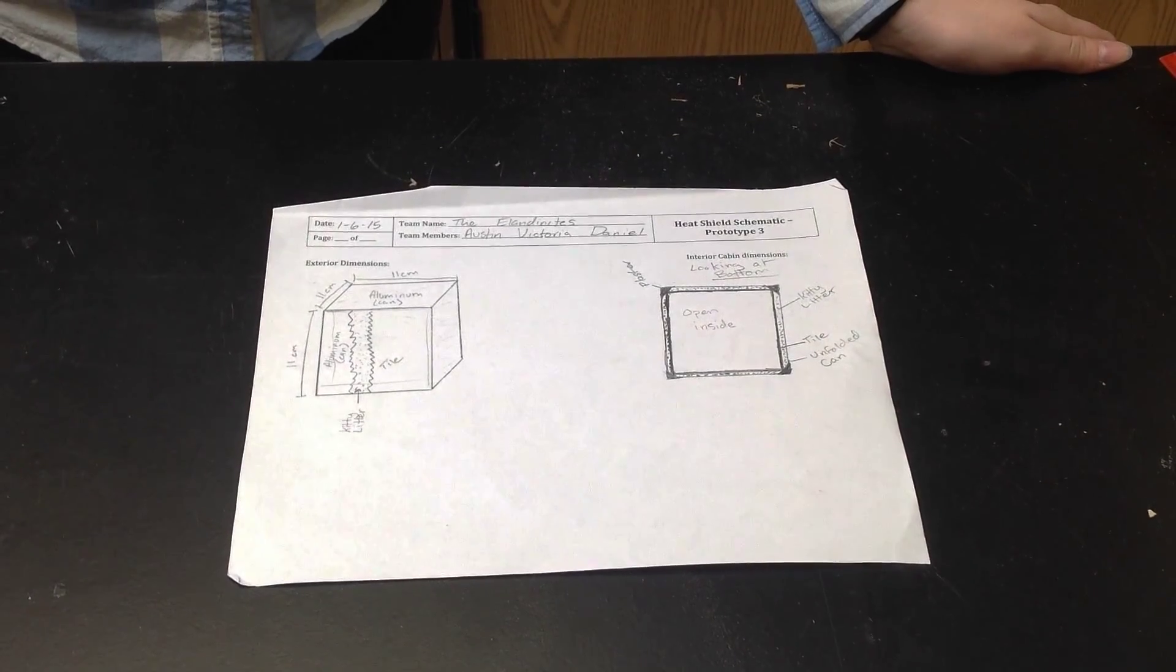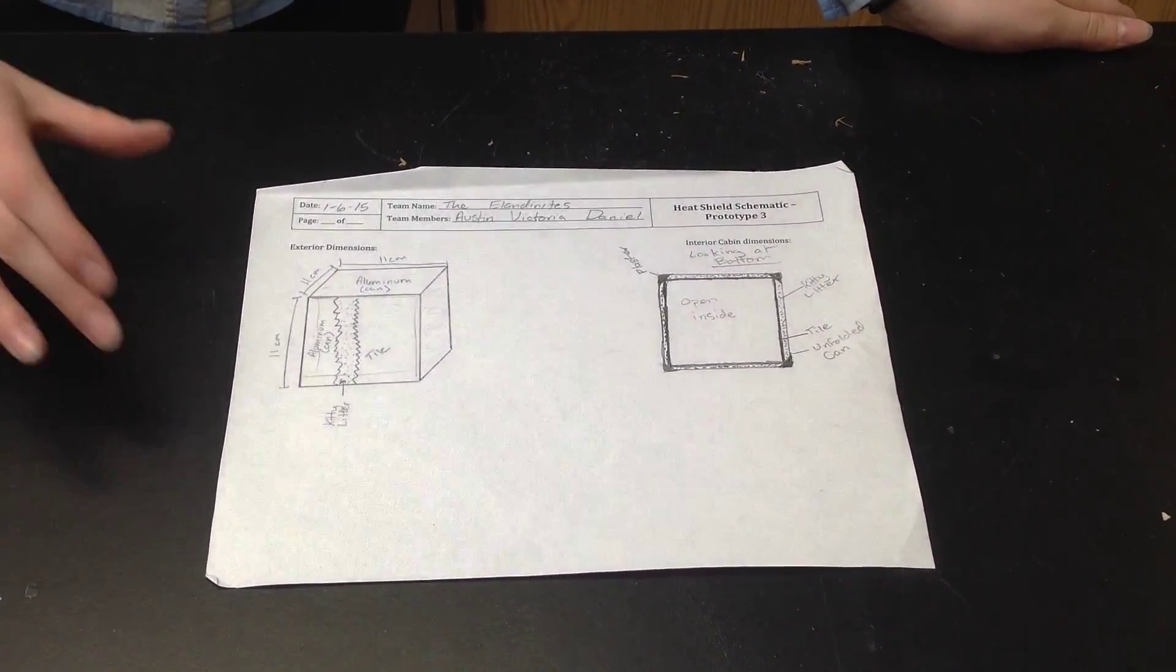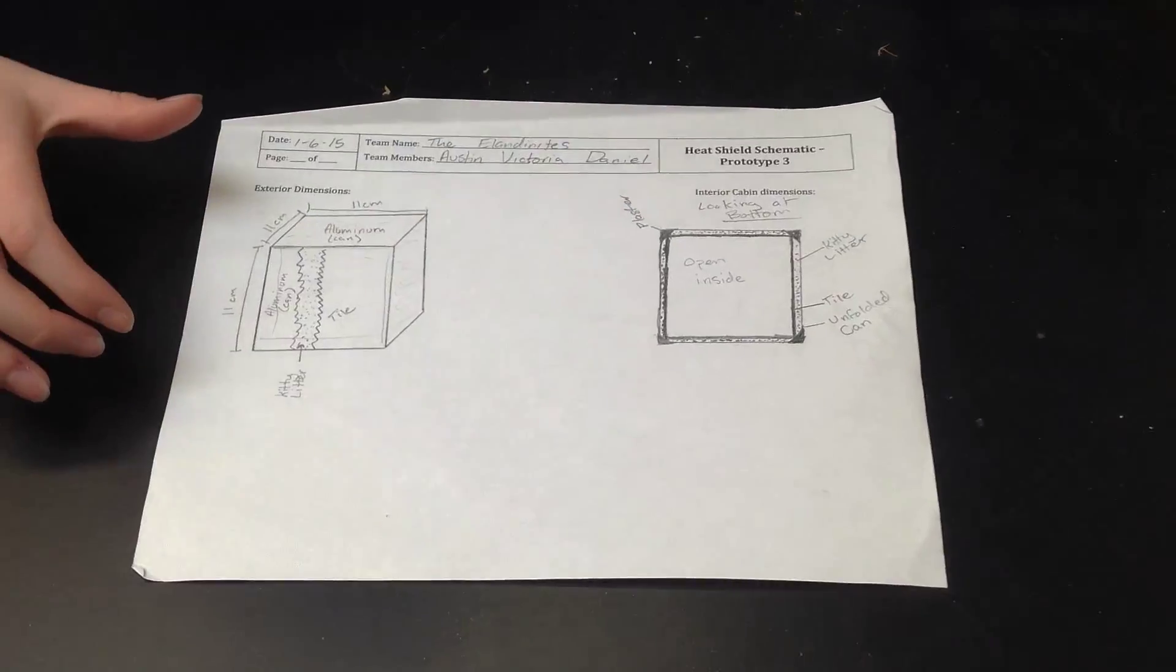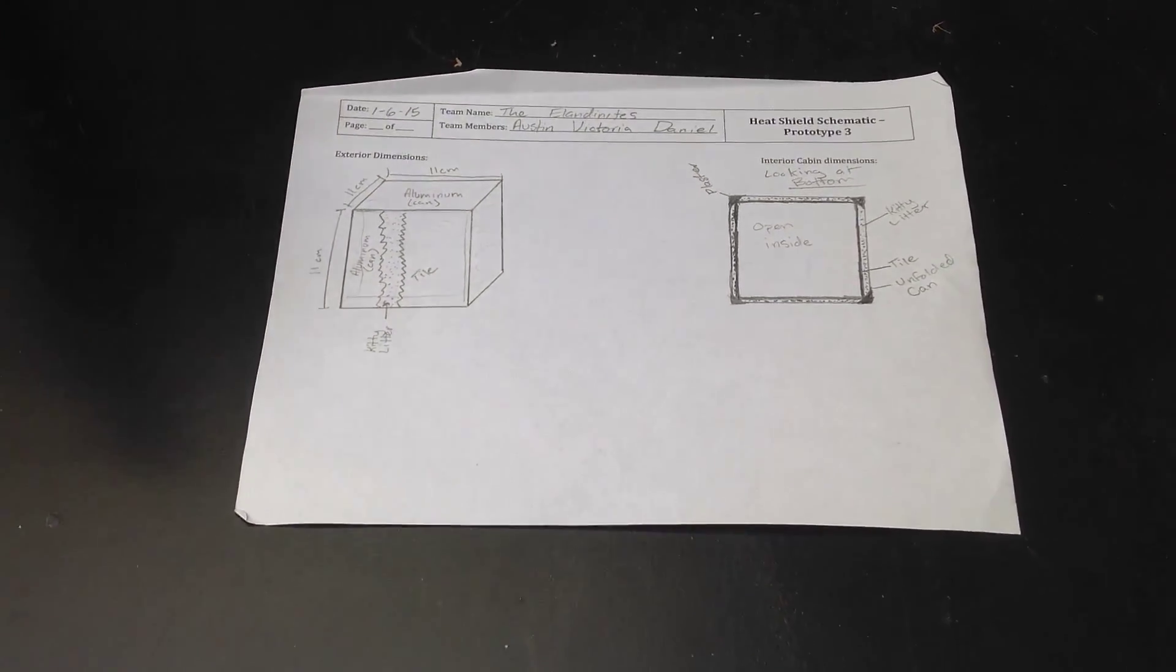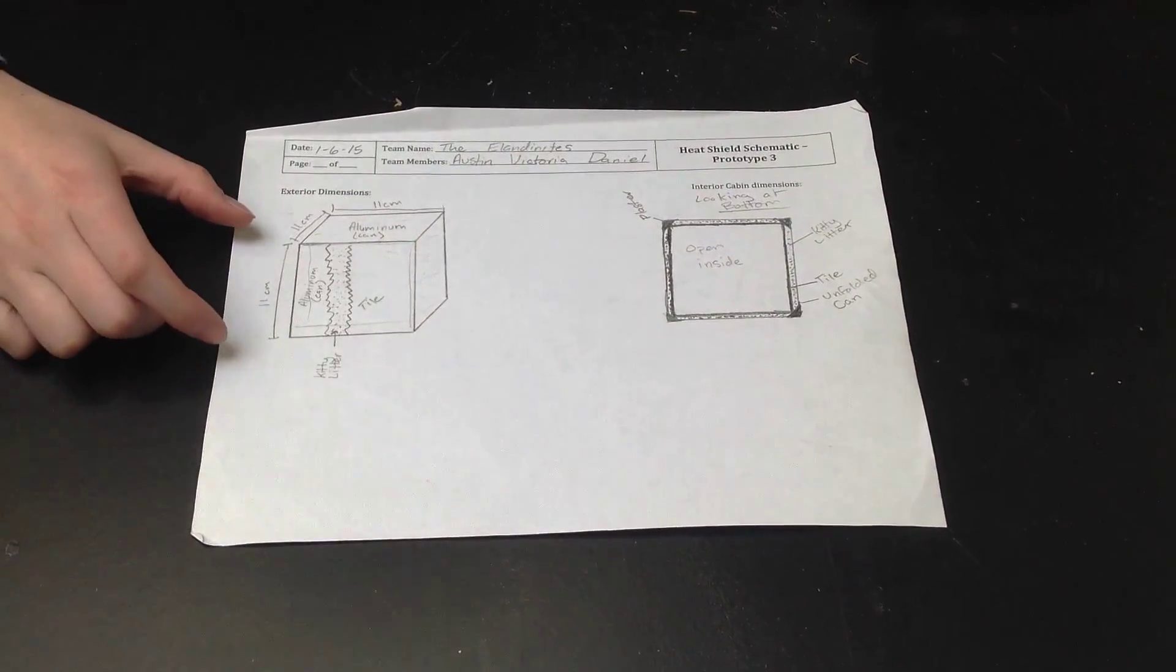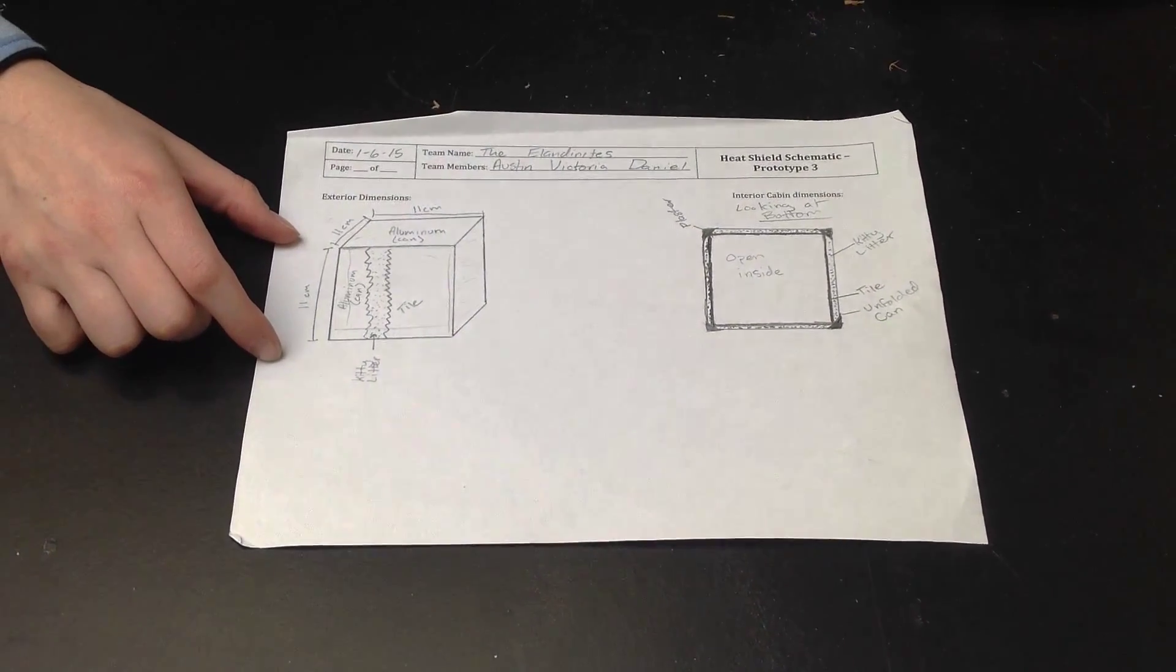For our AP Chemistry heat shield project, first we have prototype number three, which is a five-sided ceramic tile cube made of large tiles that are 11 centimeters on each side.